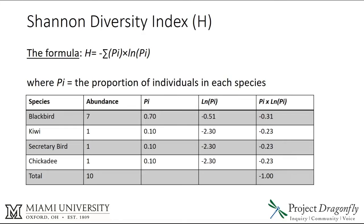This is the calculation for something known as the Shannon Diversity Index, which is denoted by the letter H. Don't be overwhelmed by the formula. H equals the negative sum of the proportion of individuals in each species multiplied by the natural log of the proportion of individuals in each species. Let's look at a table — I think it'll be really clear.